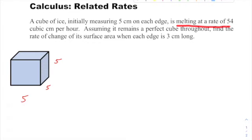This cube is melting at a rate of 54 cubic centimeters per hour. One of the basic strategies of related rates problems is to read carefully and translate all quantities into variable expressions so you can use them. What does this 54 represent? Cubic centimeters per hour.